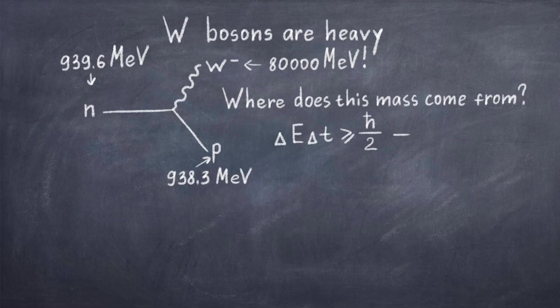This means that as long as the process happens so fast that we cannot measure it, no problem. Thus, in other words, if the W boson decays in a time delta T that is sufficiently low such that the borrowed energy or mass delta E is less than what we can observe, then this process can indeed take place.